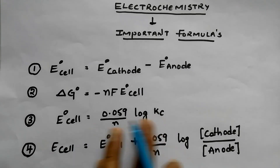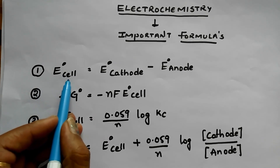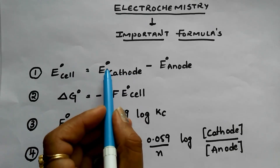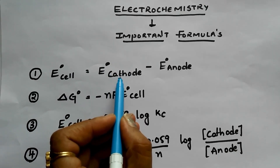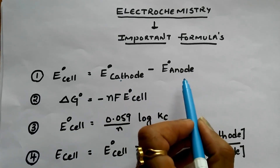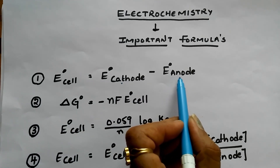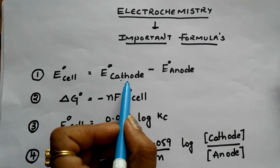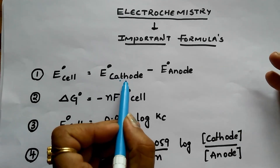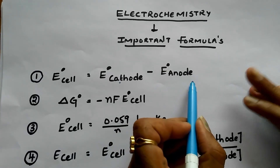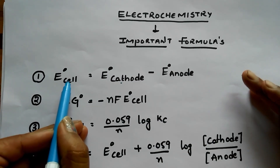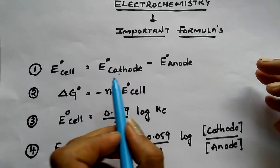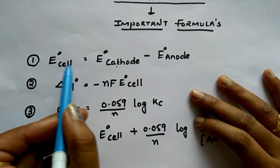E° cell is the standard EMF of the cell. E° cathode is the standard reduction potential of the cathode, and E° anode is the standard reduction potential of the anode. In a given reaction, E° cathode and E° anode values will be provided in the question, and they ask for the standard EMF of the cell. You just substitute the values into this formula and you get the answer.